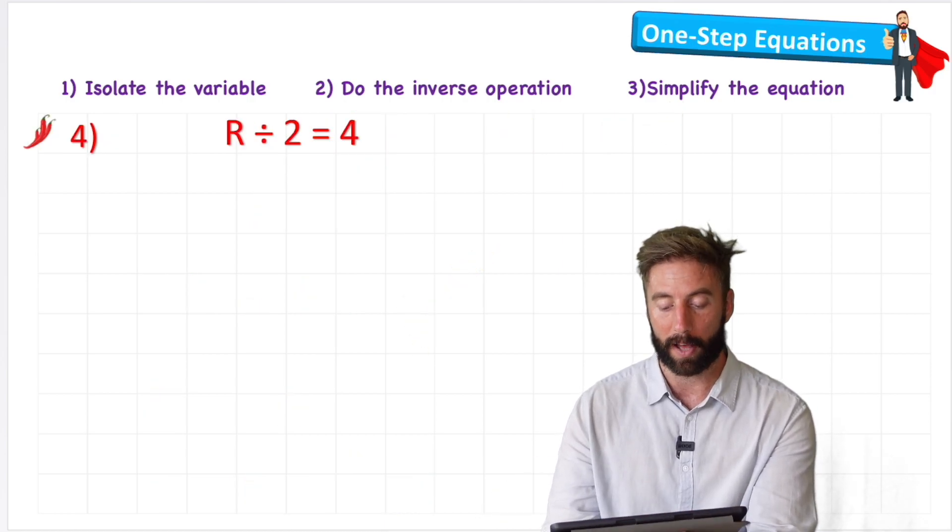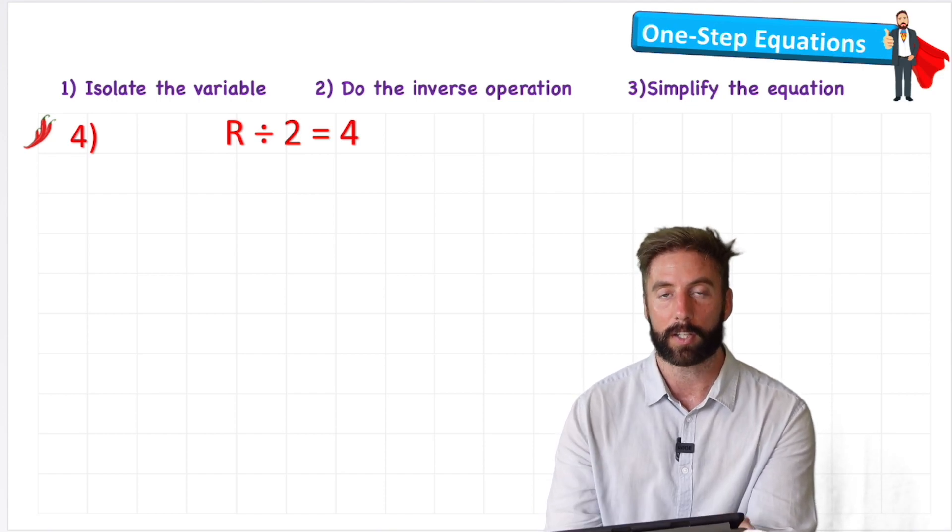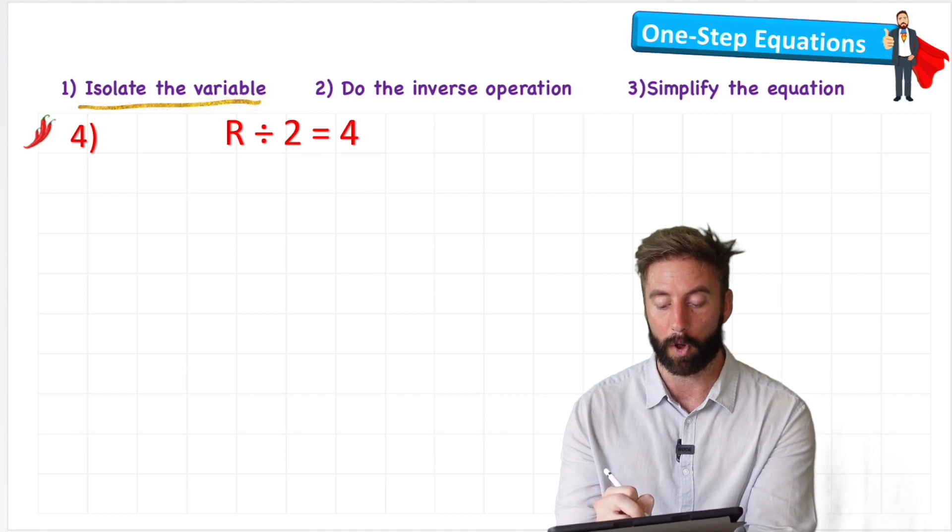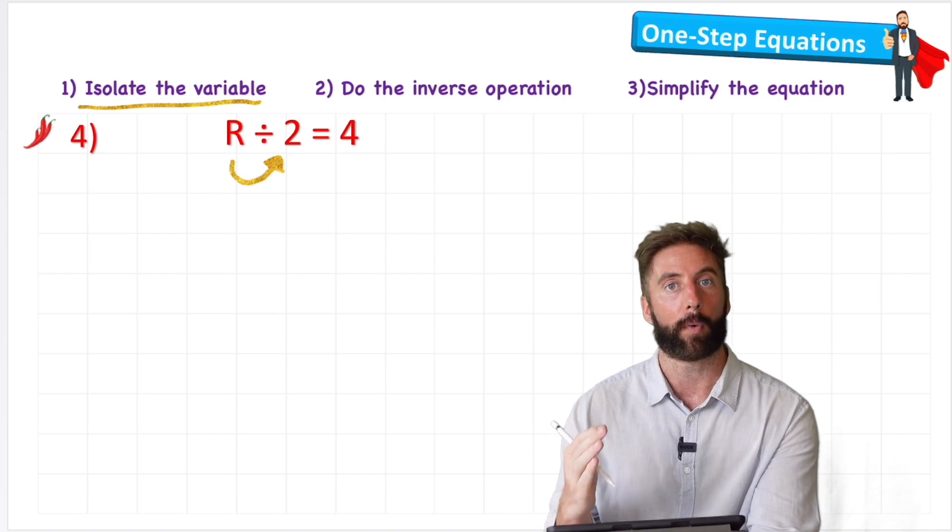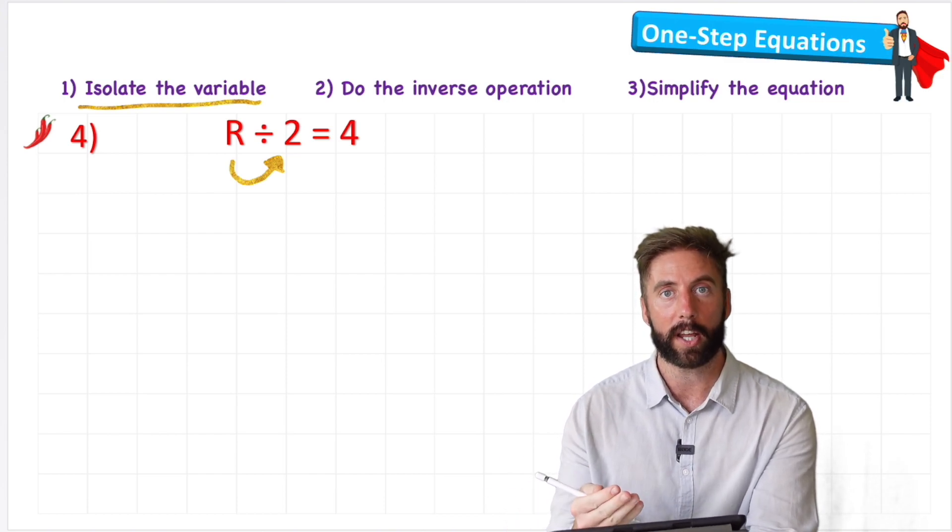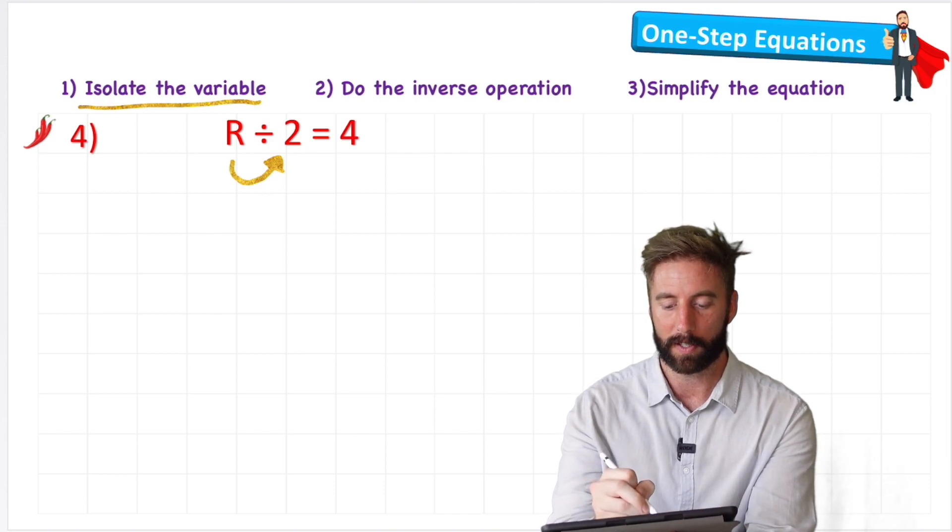Let's look at our hardest one then. We have r divided by 2 equals 4. So again, I'm trying to isolate the variable, get it on its own. At the moment, my variable is connected to this divide by 2. So if I want to get rid of a division on one side, I'm going to have to, that's right, multiply on that side as well. So let's do it.